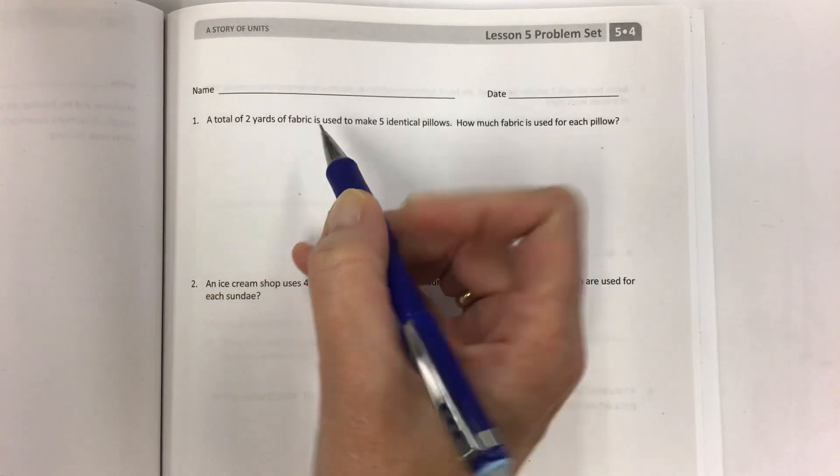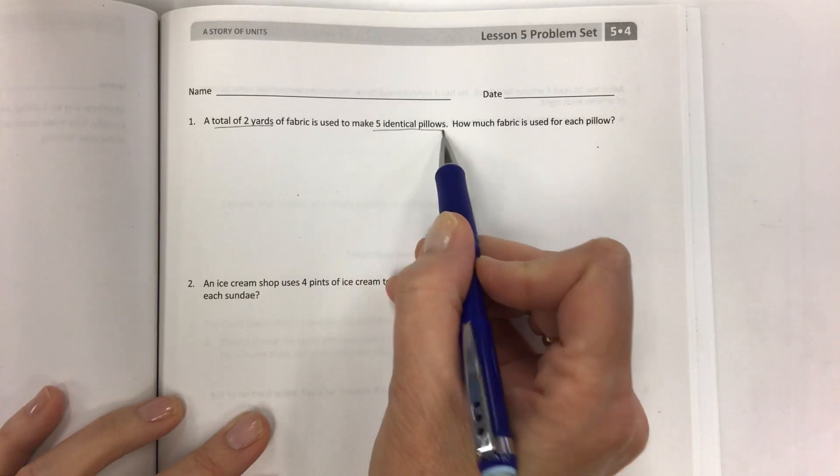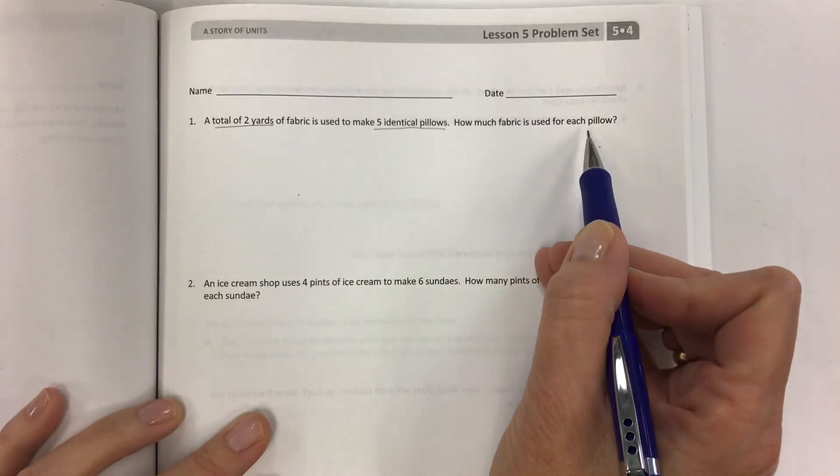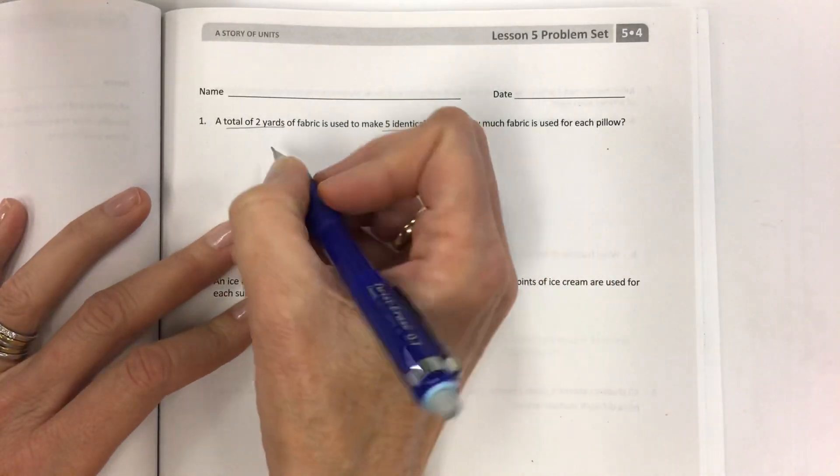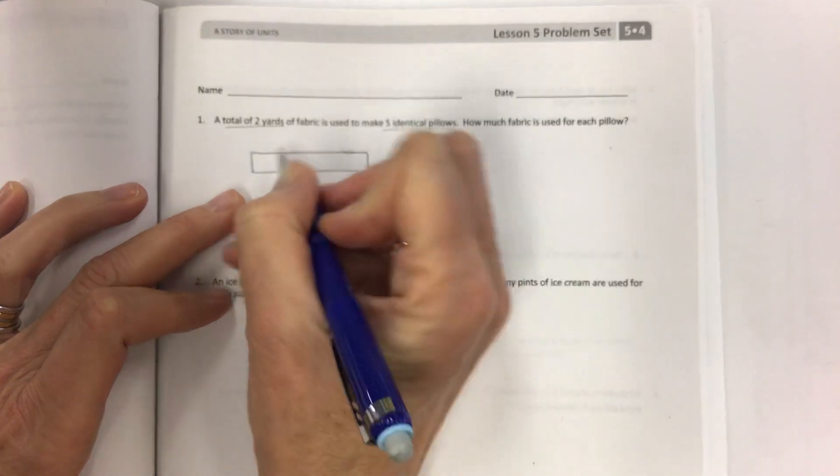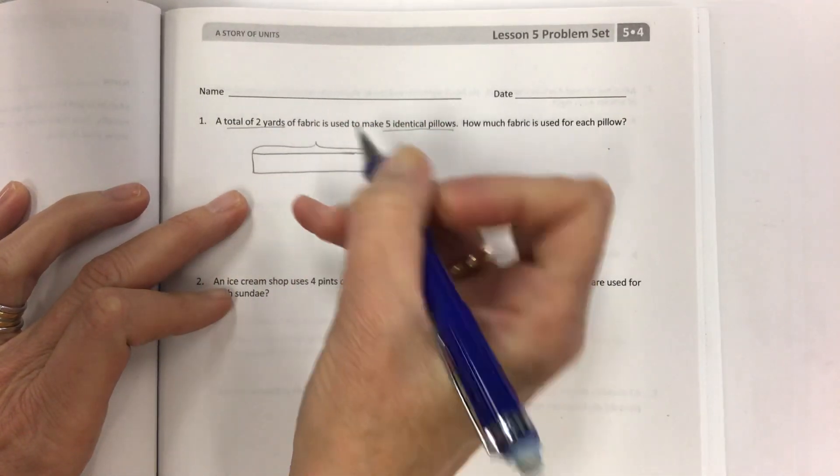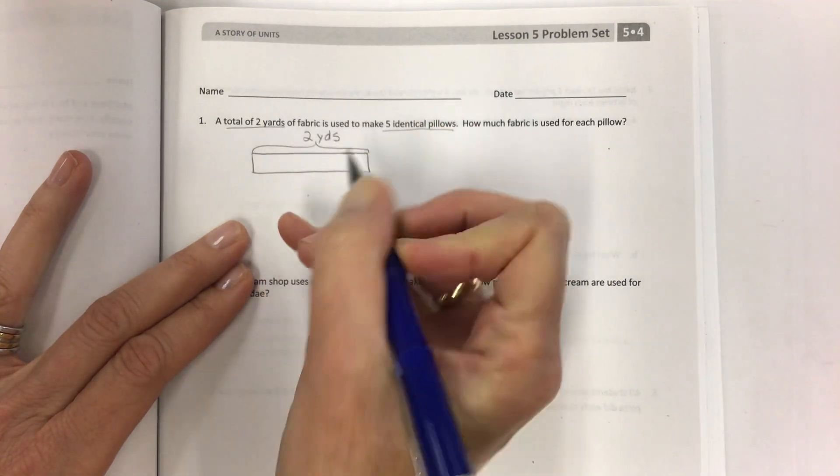We start out with problem number one. A total of two yards of fabric is used to make five identical pillows. How much fabric is used for each pillow? As always I will ask you to make a tape diagram and show the whole and the number of parts because this is going to help you.